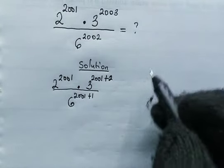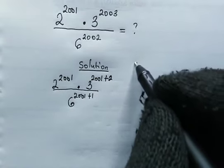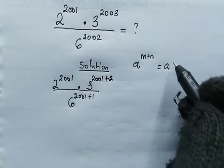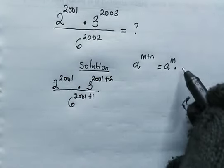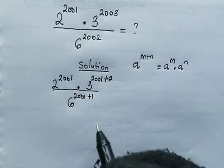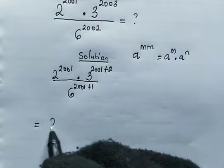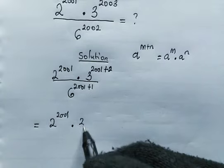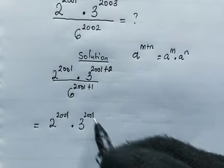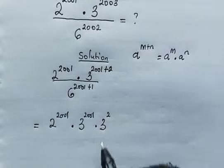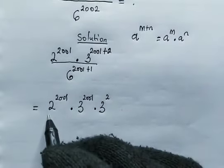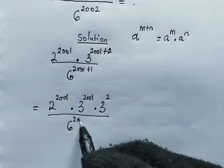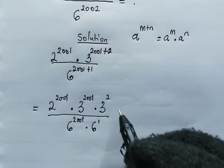Now from here, we'll be making use of this law of indices: when we have a to the power of m plus n, this is the same as a to the power of m multiplied by a to the power of n. So from here, we have 2 to the power of 2001 multiplied by 3 to the power of 2001, then multiplied by 3 to the power of 2, divided by 6 to the power of 2001 multiplied by 6 to the power of 1.